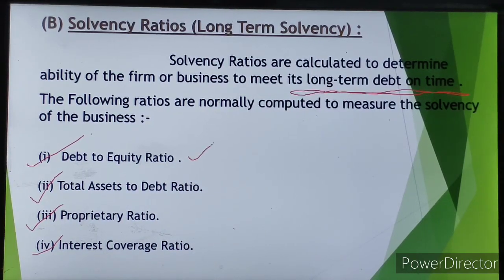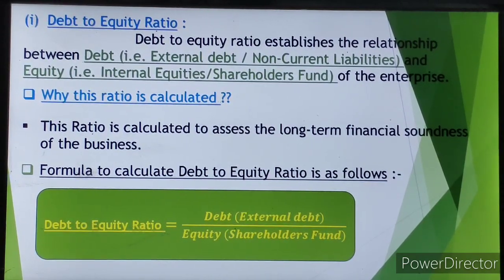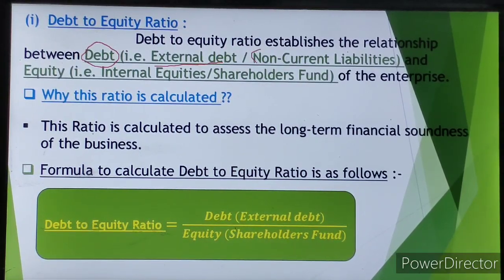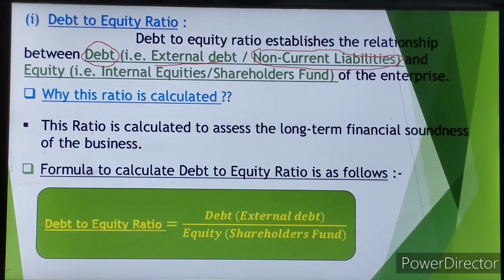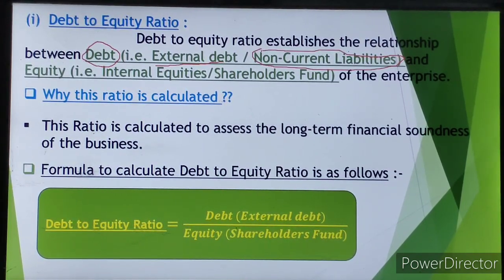In this lecture, we will discuss debt to equity ratio — what it is, what are the components of debt and equity, how it is calculated, and what is the formula. Debt to equity ratio establishes the relationship between debt and equity. Current liabilities are those payable within 12 months from the date of the balance sheet, while non-current liabilities are those payable after a time period of 12 months.